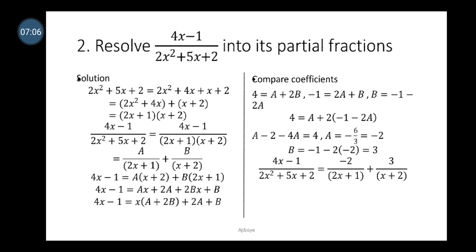We can now rewrite the complex fraction as (4x minus 1) over (2x plus 1)(x plus 2). Since we have linear factors as denominators, we introduce constants as numerators. This becomes A over (2x plus 1) plus B over (x plus 2).